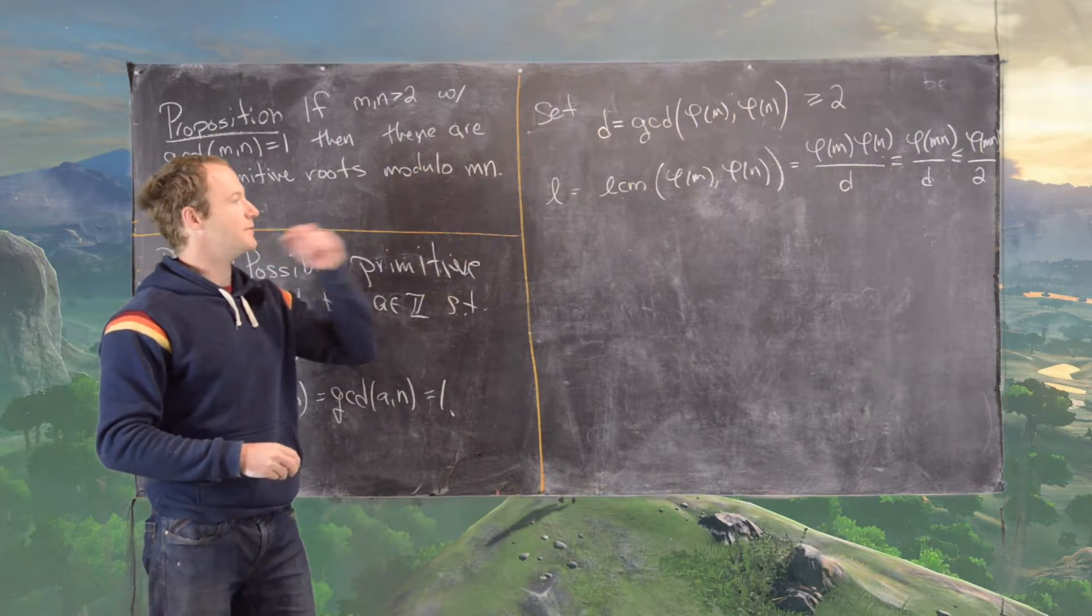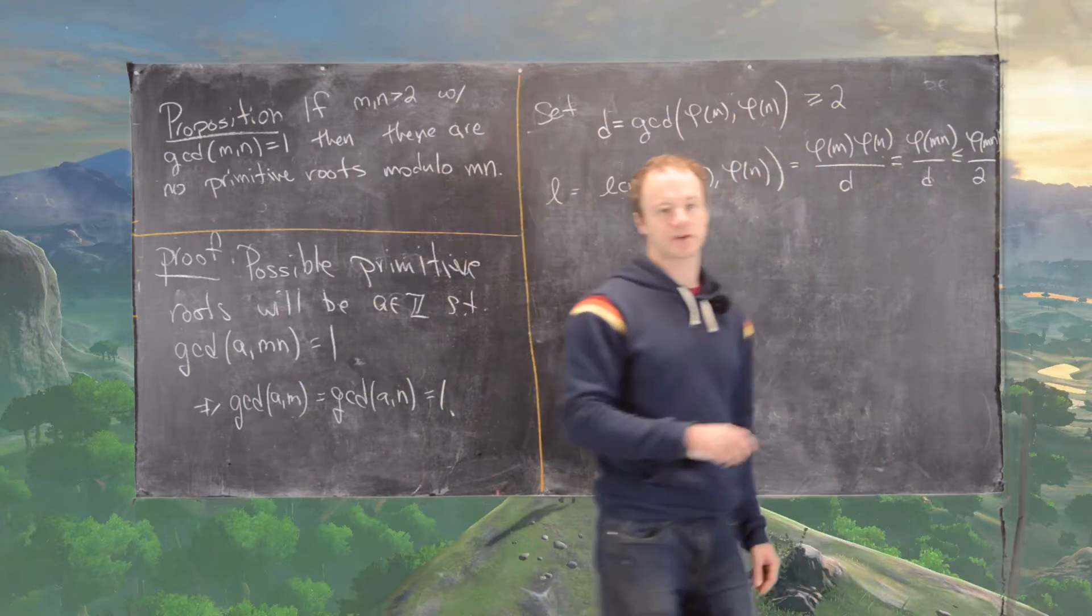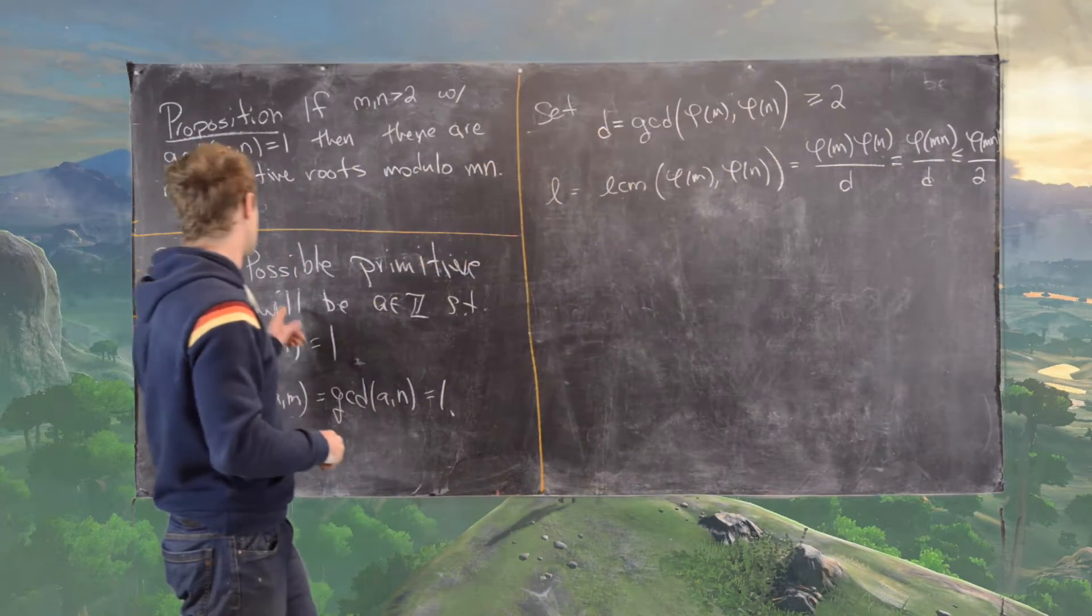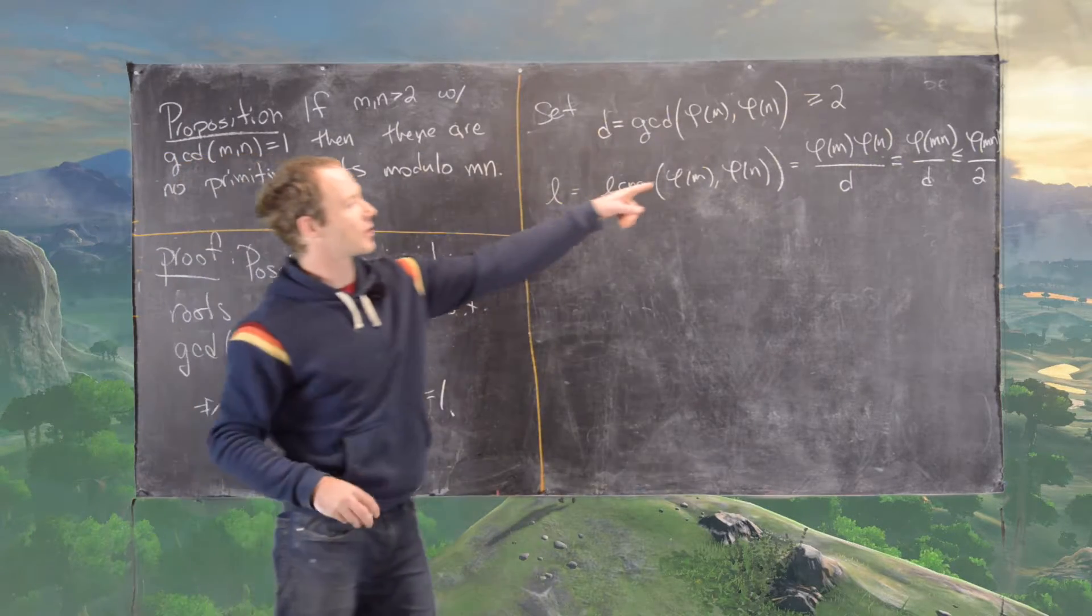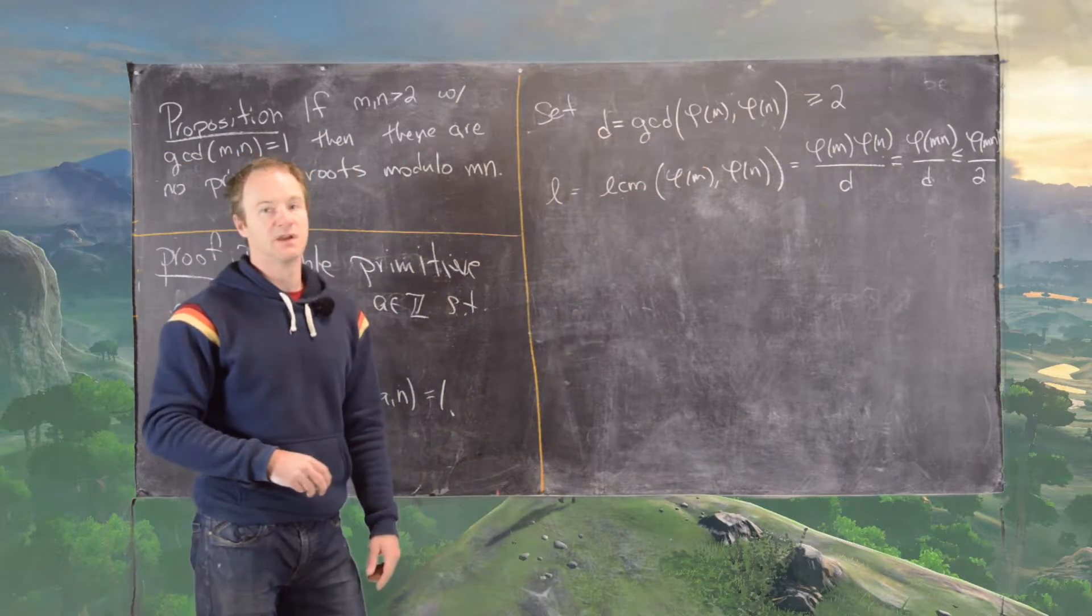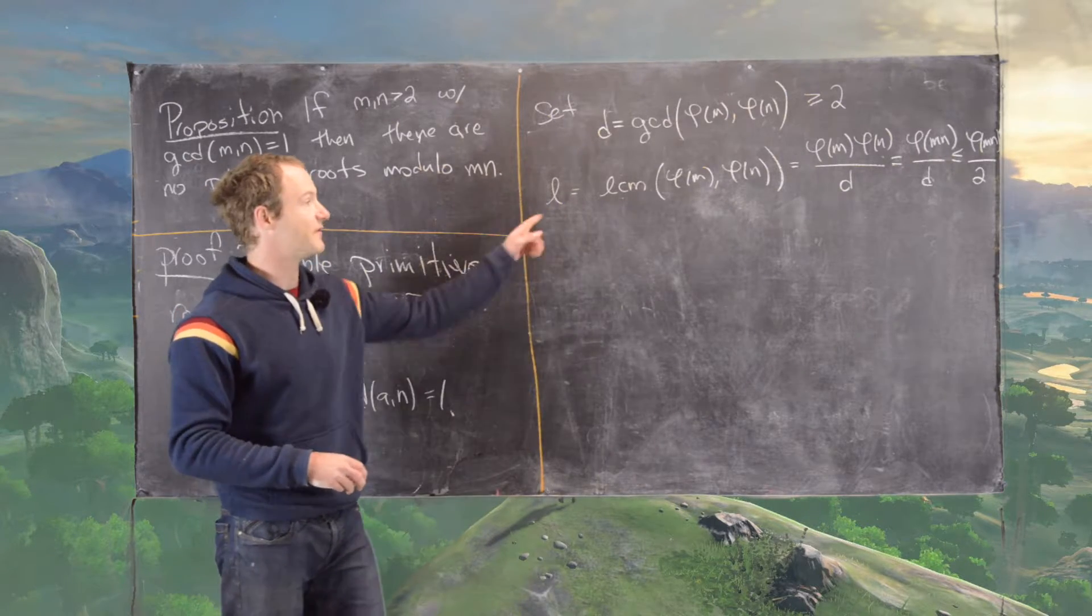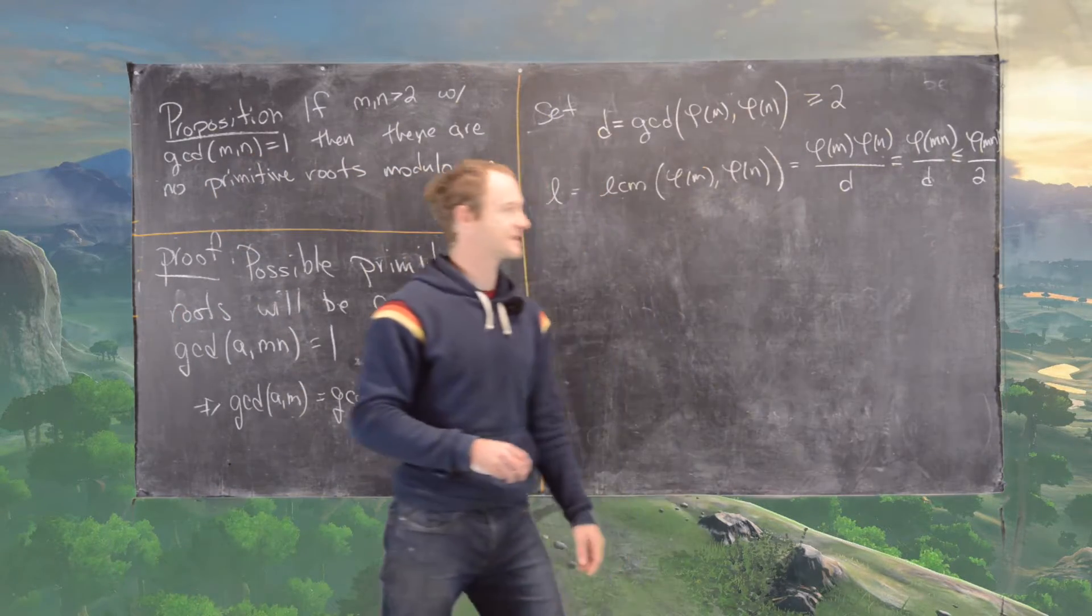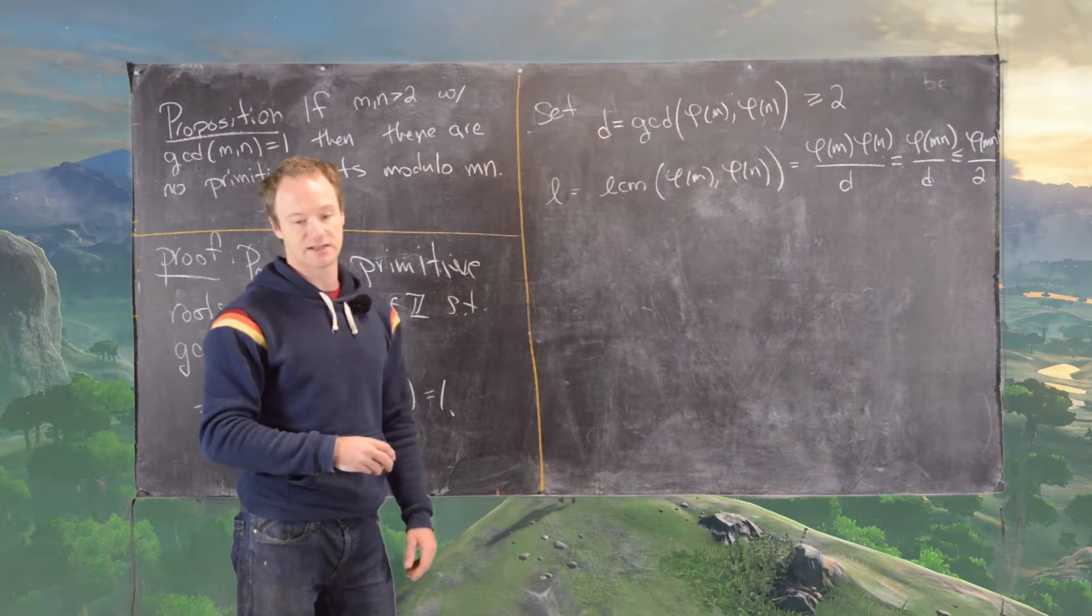So notice that L is less than or equal to phi of MN over 2. Also notice that if we have a primitive root, then it will have order phi of MN. So what we want to show is that its order is less than phi of MN. We'll bound it above by this number phi of MN over 2, which L is less than or equal to.